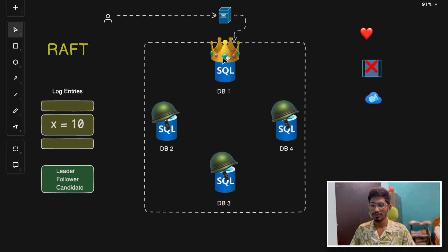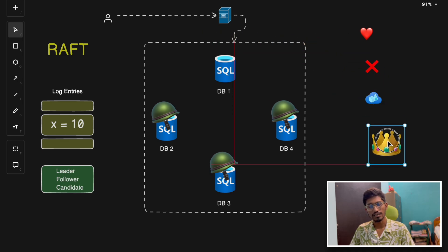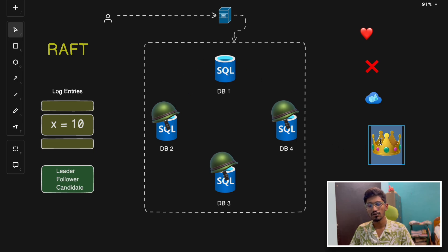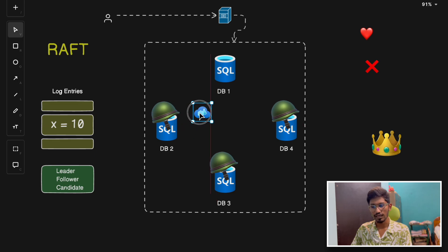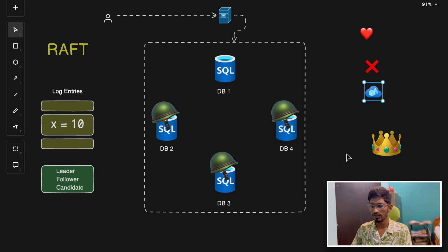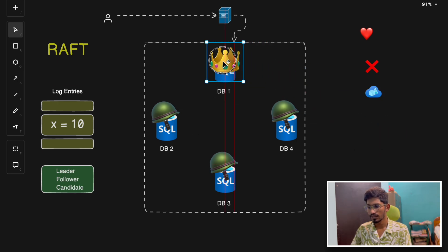Let's say we have a Raft cluster with four database nodes. Initially all the nodes start as followers. Now if there is no leader, a follower becomes a candidate. It then initiates the election process to become the leader and sends a Request Vote RPC — a remote procedure call — to other servers: 'please vote me as the leader.' Once a majority of the followers vote for this node to be the leader, it becomes the leader.